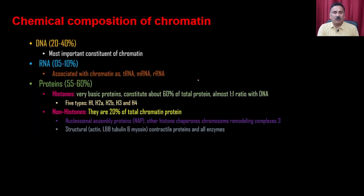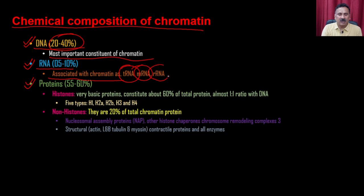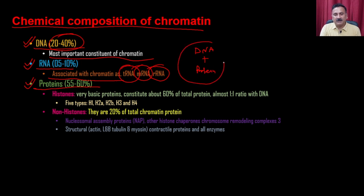The chemical composition of chromatin includes DNA, RNA, and proteins. DNA constitutes about 20–40% and is the most important constituent. RNA is about 5–10%, associated as transfer RNA, messenger RNA, and ribosomal RNA — part of the expression machinery. Proteins constitute 50–60% of chromatin, making chromatin mostly DNA plus protein at roughly 40% DNA and 60% protein.